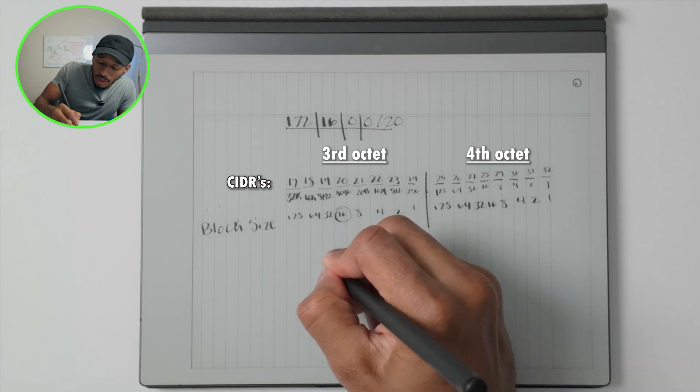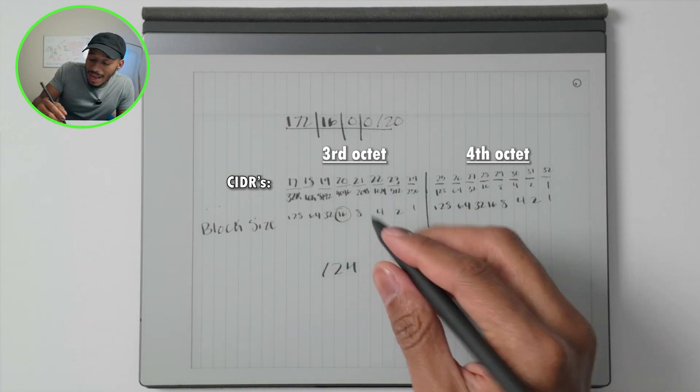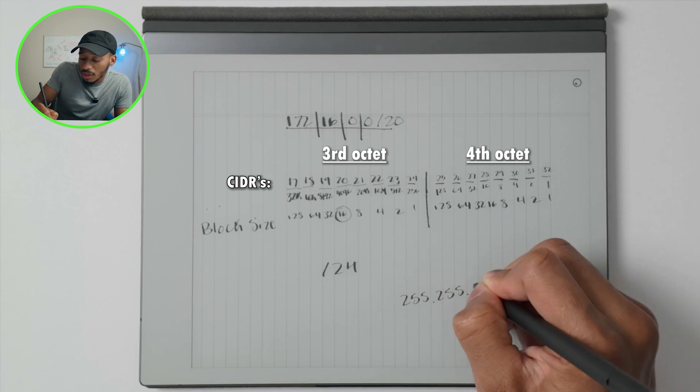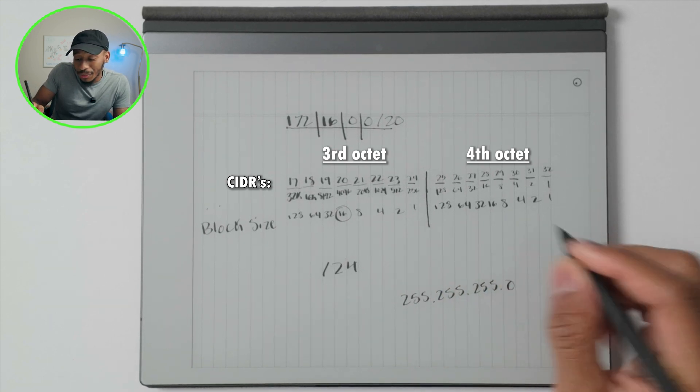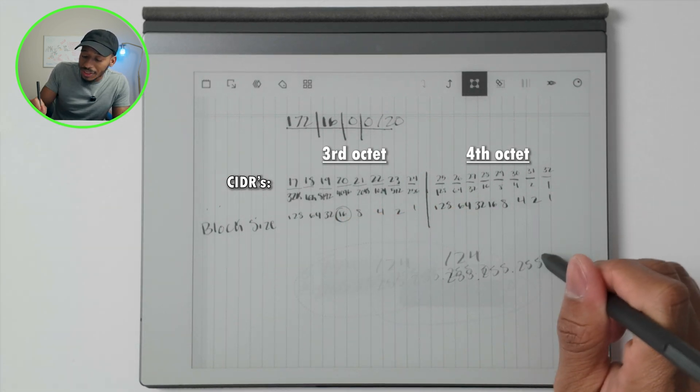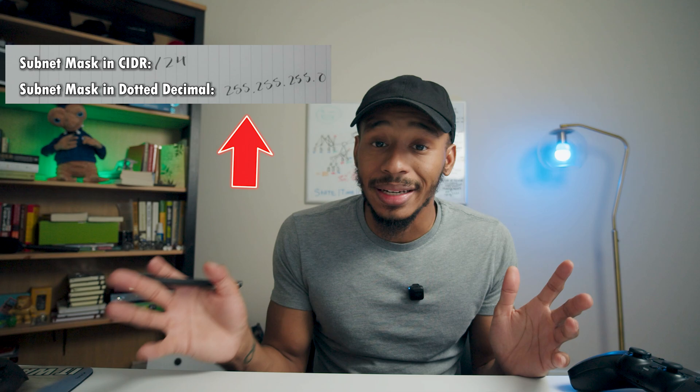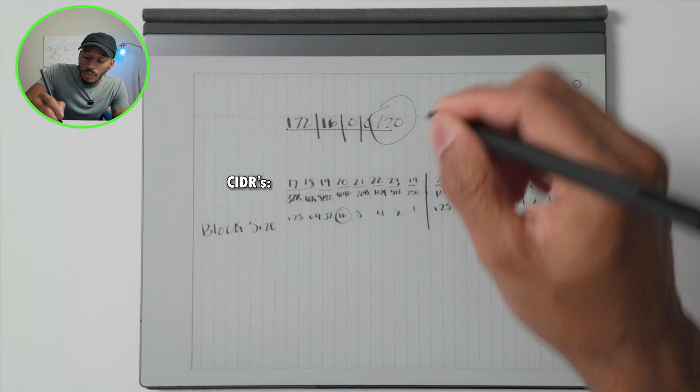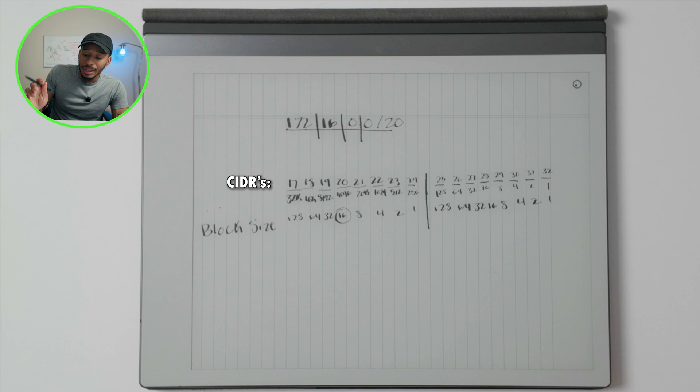You might have seen a /24 network represented as 255.255.255.0, and why exactly is that? Why would this be represented like that? Lastly, there's one more thing you'll need to understand, and that's understanding what a network looks like in dotted decimal format. That's because you won't always see this CIDR right here written out in a slash notation that makes it easily identifiable.